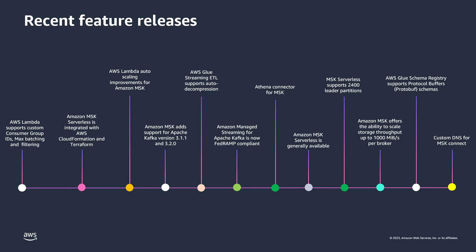Previously Lambda used to scale up consumers every 15 minutes. Now when you use Lambda as a Kafka consumer, it starts with one consumer, checks the offset lag metric every minute, and scales up and down every three minutes. AWS Glue Streaming ETL added support for auto-decompression for bzip, gzip, Snappy, and many other compression types, and Glue Schema Registry added support for Protobuf — so Glue Schema Registry now supports Avro, Protobuf, and JSON Schema. MSK Serverless added support for 2,400 leader partitions per cluster, up from the previous limit of 120 partitions per cluster.